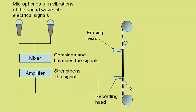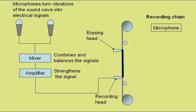So here we can see the tape passing from one spool to the other. So the recording chain starts with the microphone, passes through the mixer and then to the recorder, in this case a tape recorder.